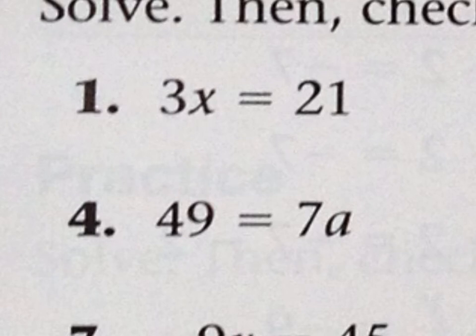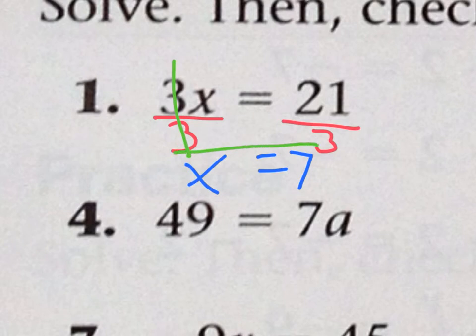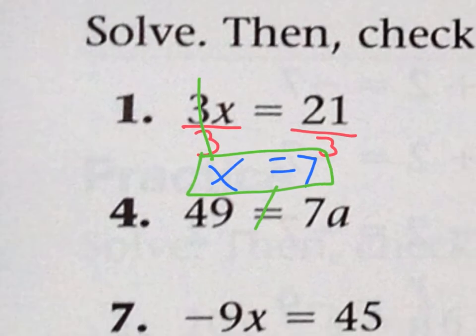We always need to get the variable by itself. It says 3 times x, and the opposite of multiplication is division. So we're going to be dividing. 3 divided by 3 cancels out, so all we're left with is x. And 21 divided by 3 is 7. So x equals 7 is our answer. We can check it to see if that's right.